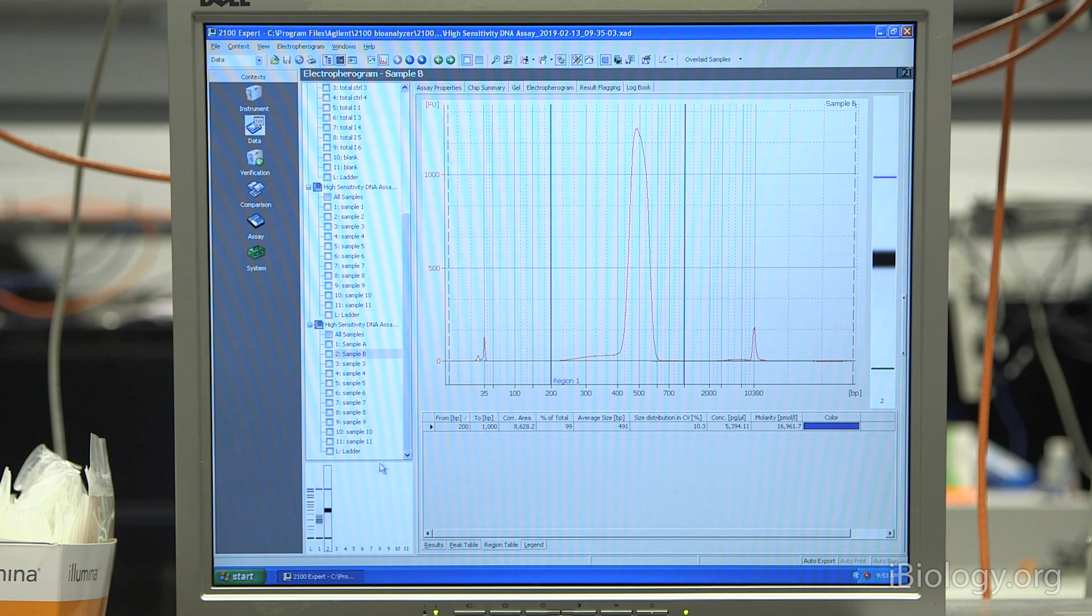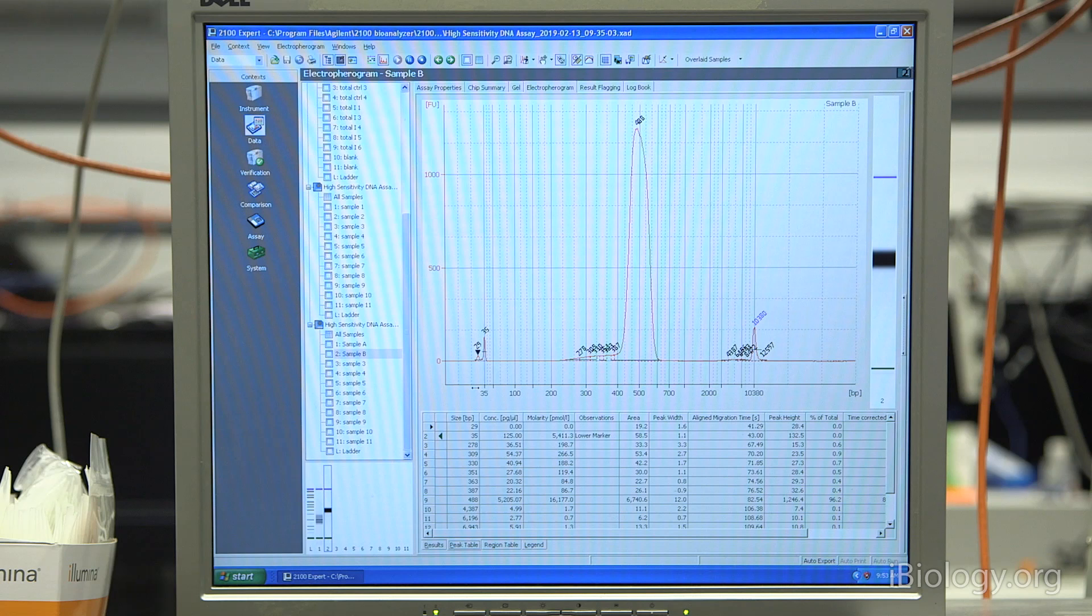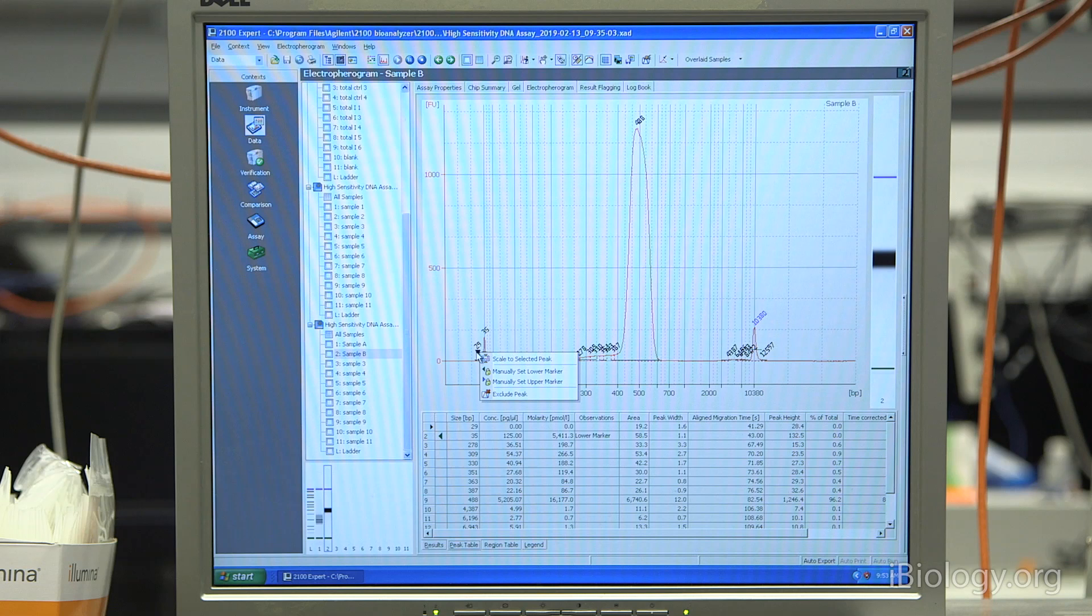Sometimes, the bioanalyzer won't detect your marker peaks correctly. You'll see a red flag or a red mark down here in this simulated gel image. This is something that's easy to correct by going to the Peak Table tab over here. For instance, on this sample B, we have this minor peak that showed up. Sometimes, this minor peak might get misidentified as a marker. On this peak table, what you can do is you can highlight over these peaks. Once you see a bullseye appear, you can right-click and manually set them as the lower or upper marker.